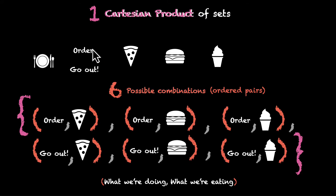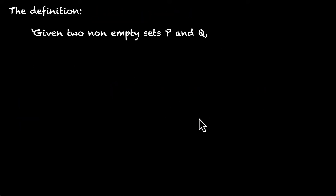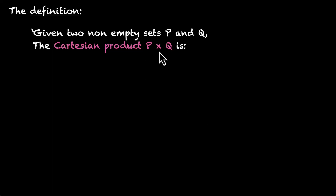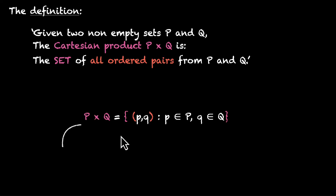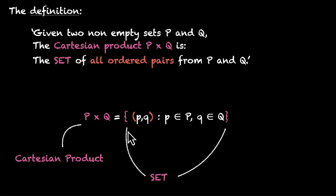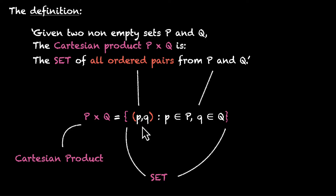So we started with two sets. The first set was things that we were doing, the second set was things that we are eating, and we found the Cartesian product of these two sets. Now let's look at the definition. Given two non-empty sets P and Q, the Cartesian product P times Q — since it's a product, we use the multiplication sign — is the set of all ordered pairs from P and Q. The first elements will be from P and the second elements will be from Q. We need to carefully look at both P and Q and find all ordered pairs and combine them in this set.